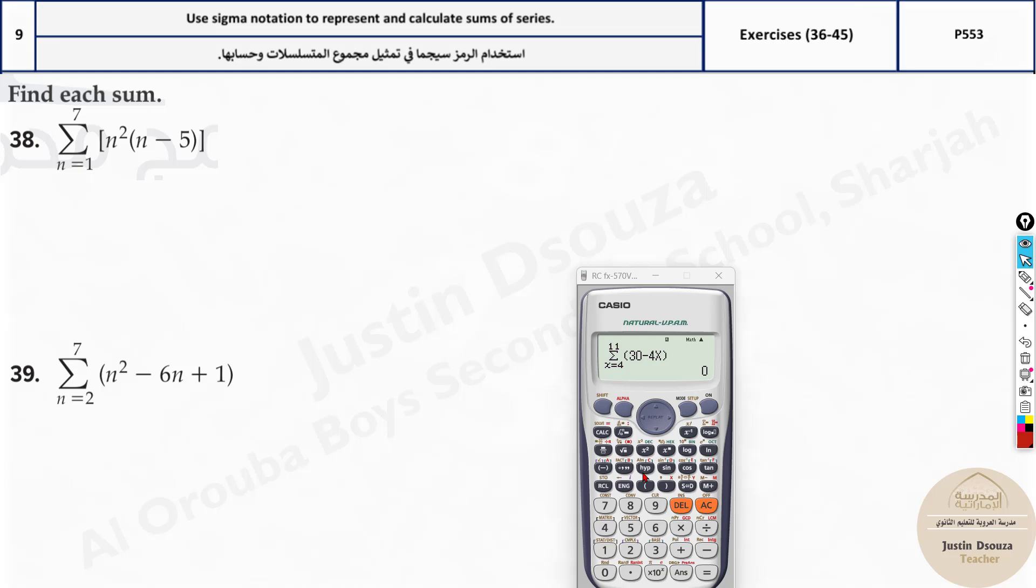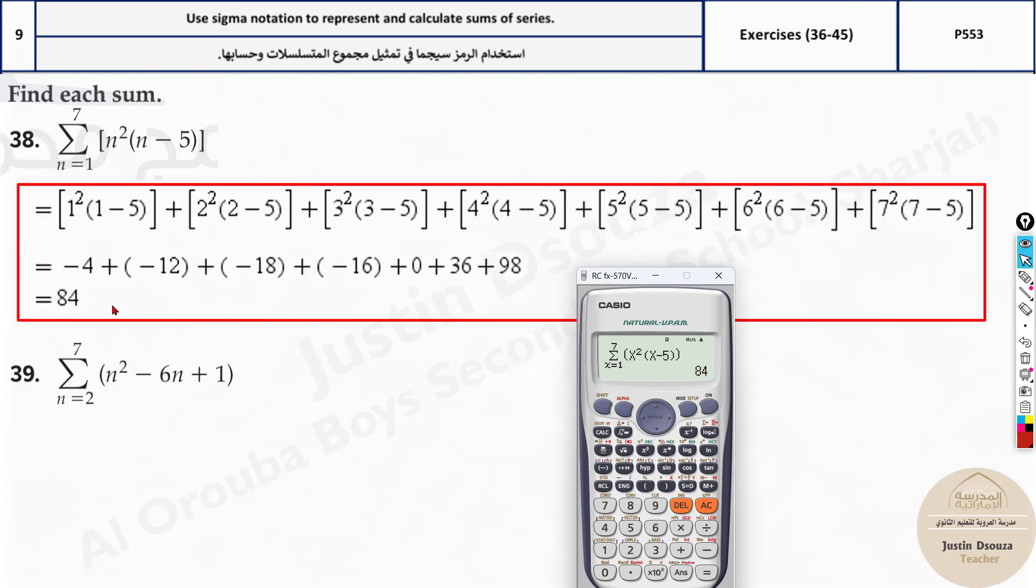Similarly, let's try the 38th one. All you need to do is shift and this symbol to get the summation. Here you need to use the brackets properly: n squared, bracket, n minus 5, close the bracket. Now open two brackets, close two brackets. It starts at 1 and ends at 7. So the answer is 84.